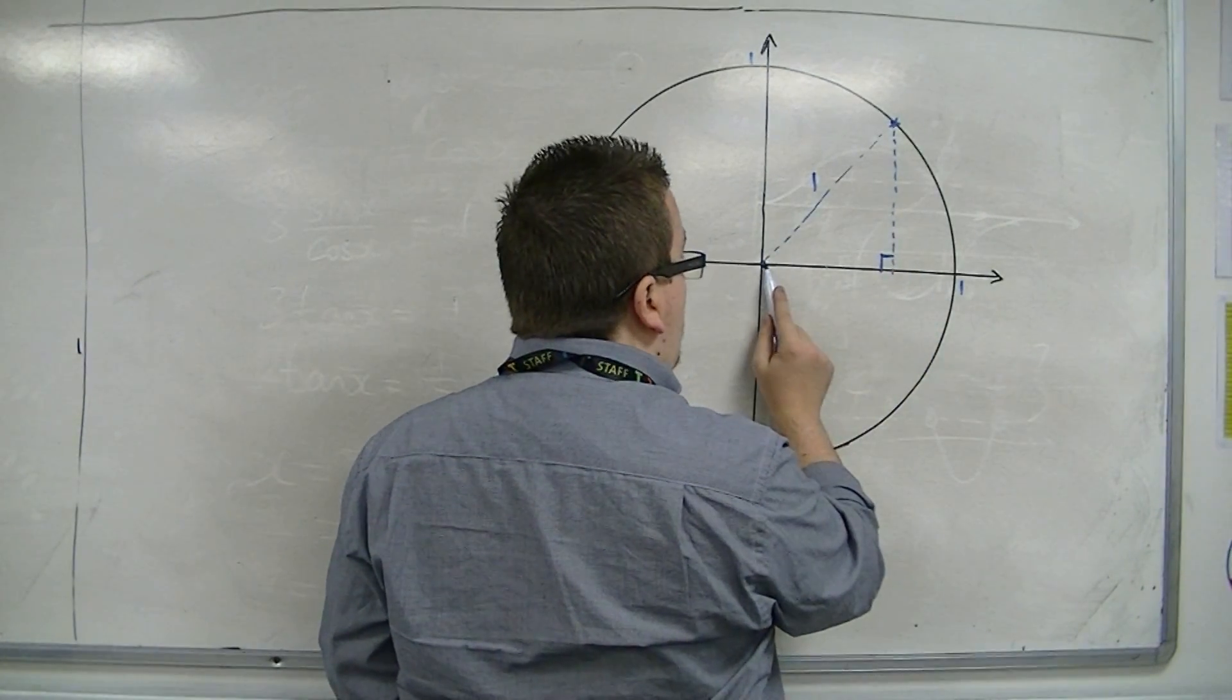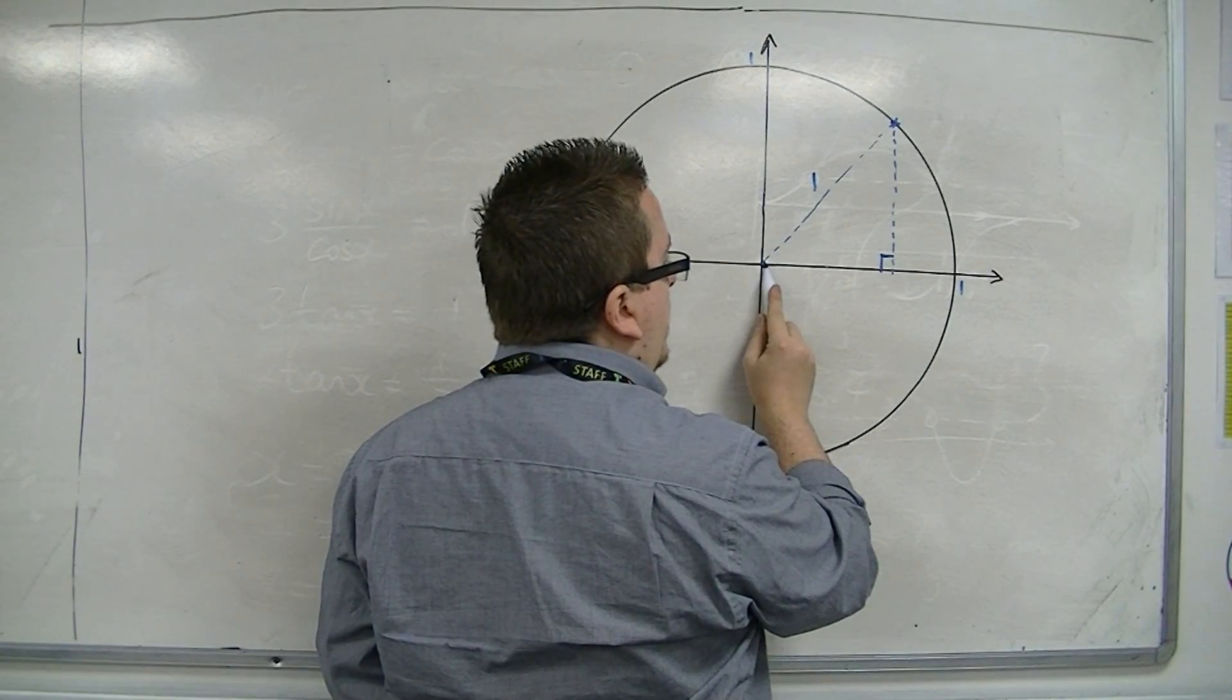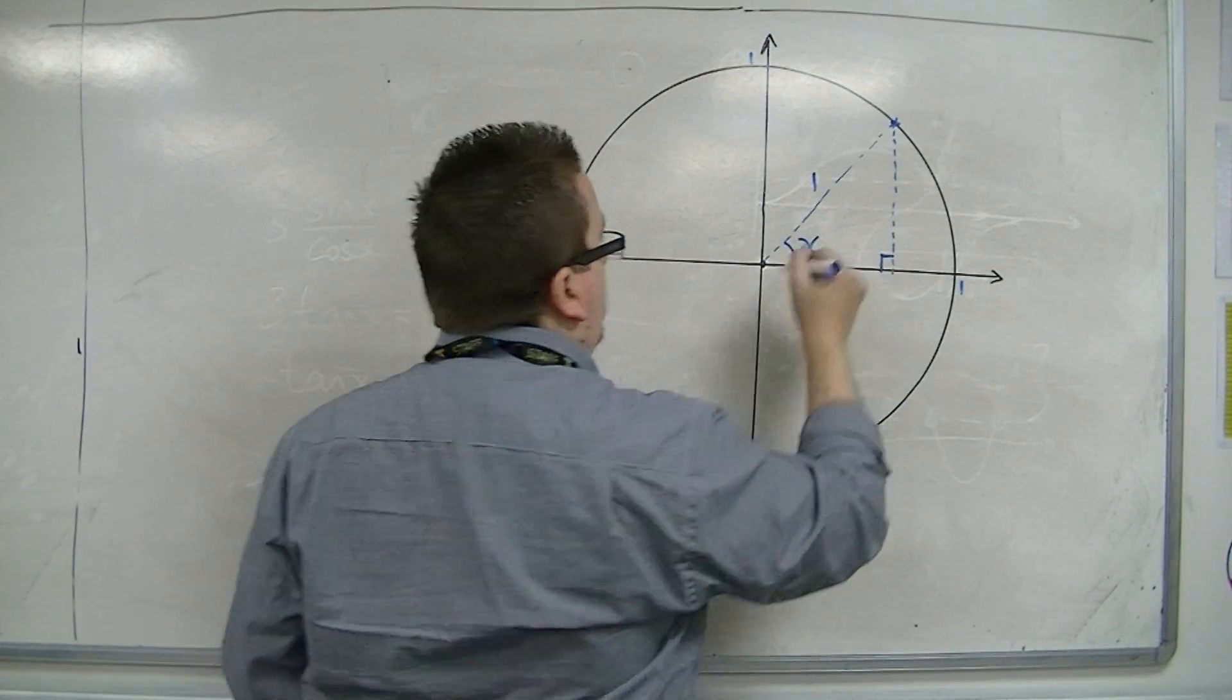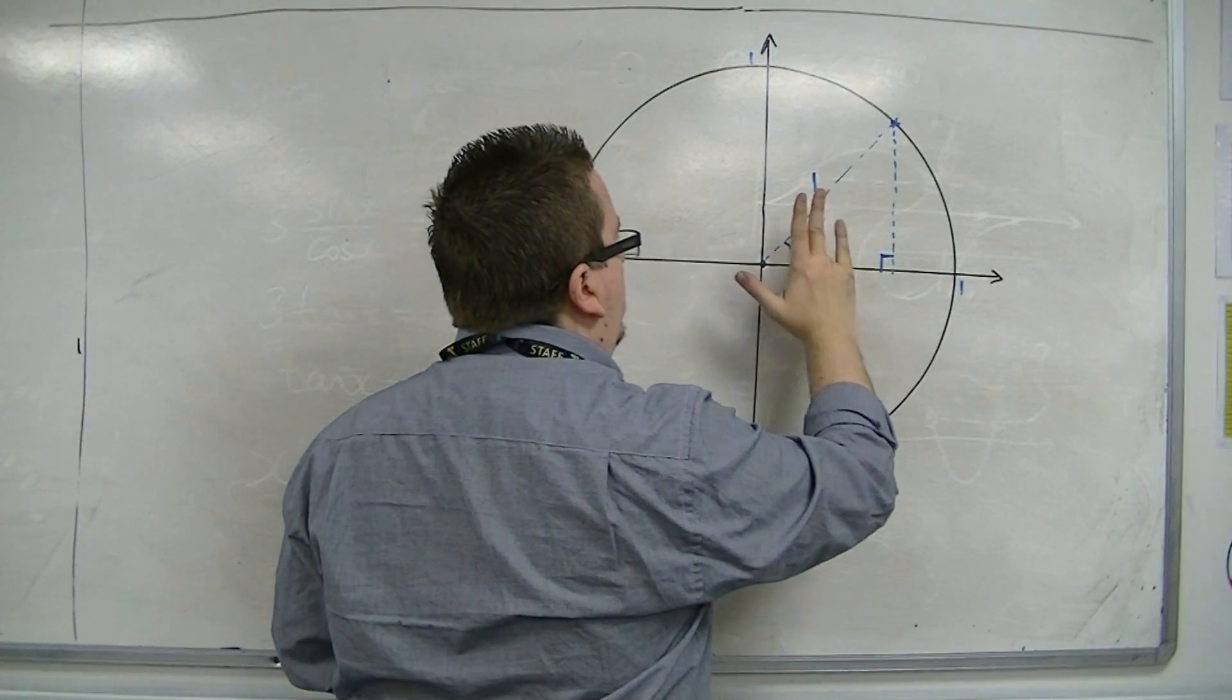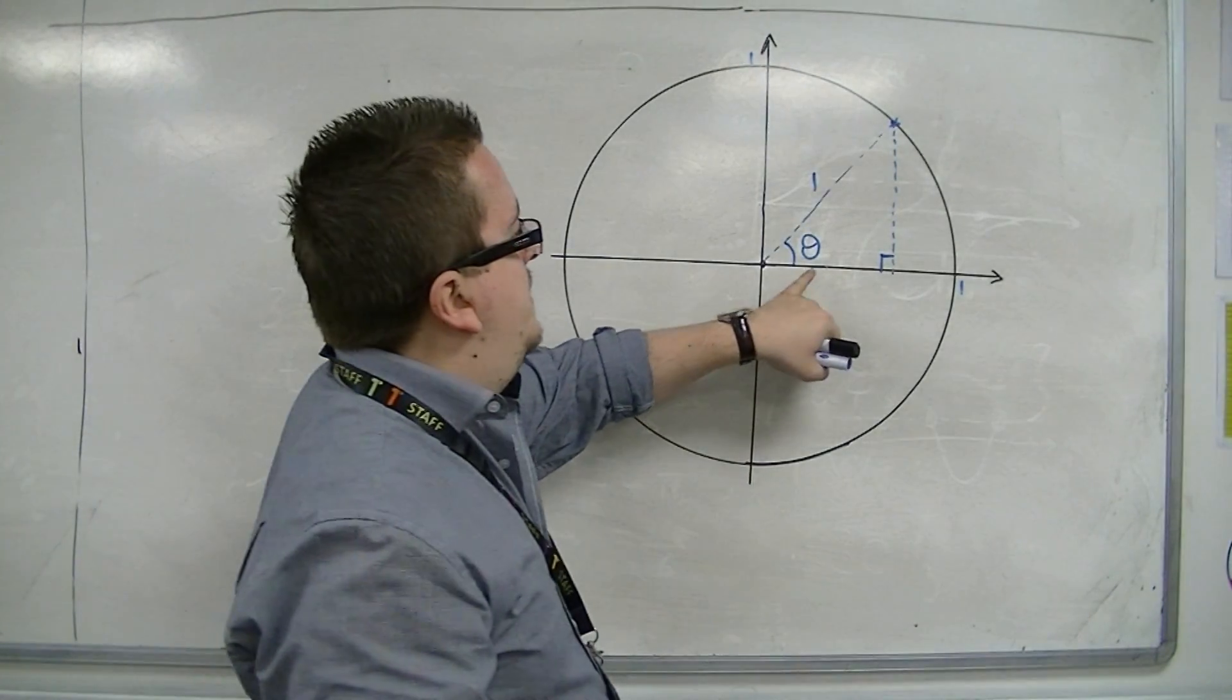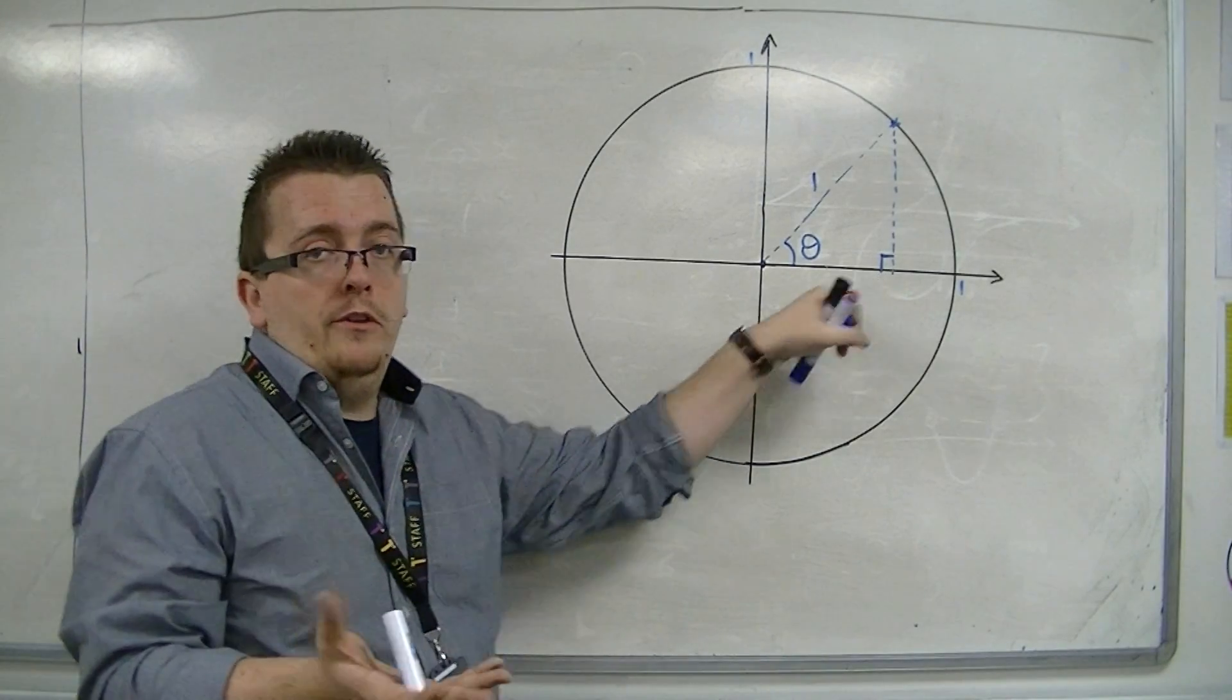Then if we look at the length of the base of the triangle, then using trigonometry, let's call that angle, well, let's call it theta, not x. Let's call it theta. So if we use trigonometry, basic trigonometry, SOHCAHTOA, for example,